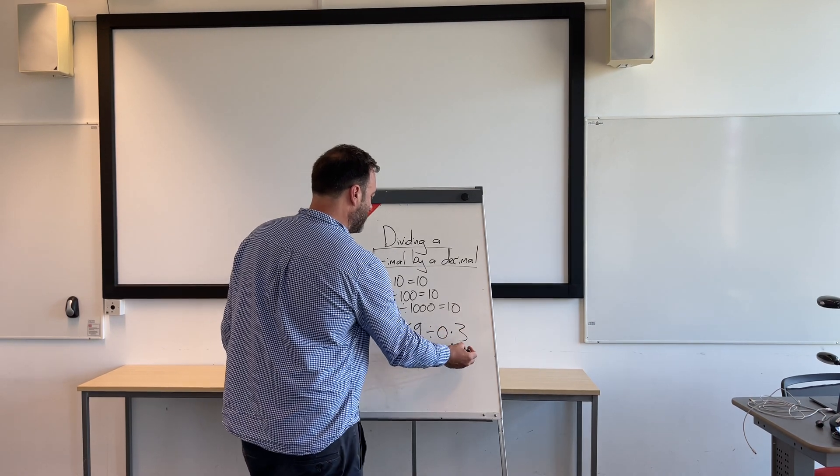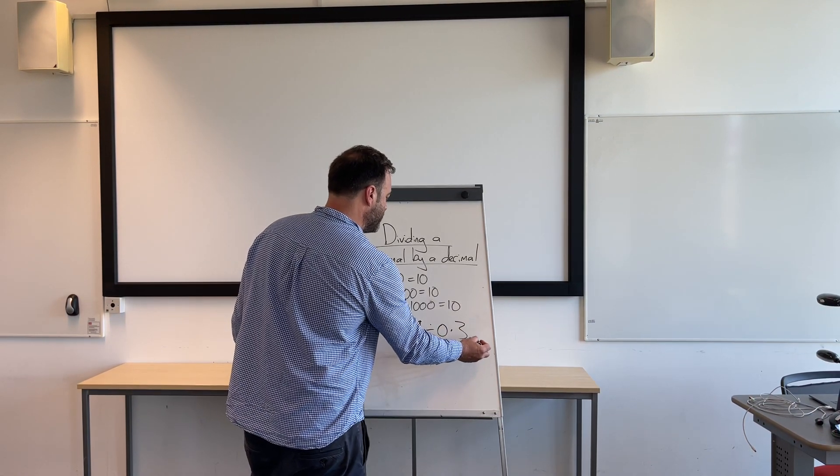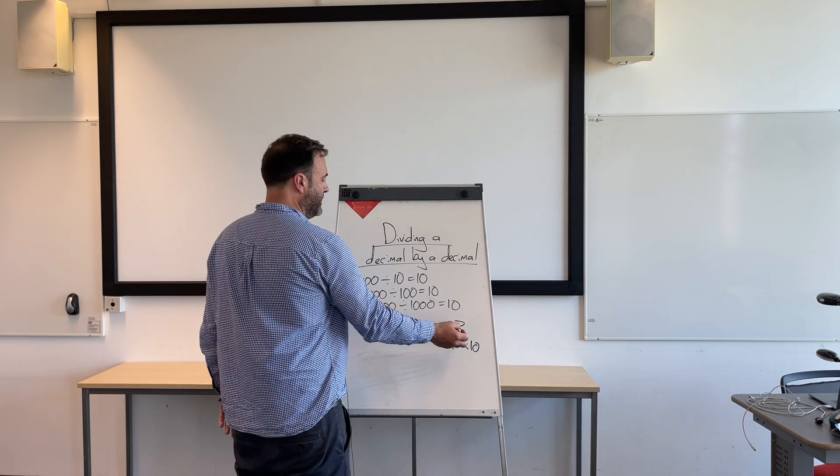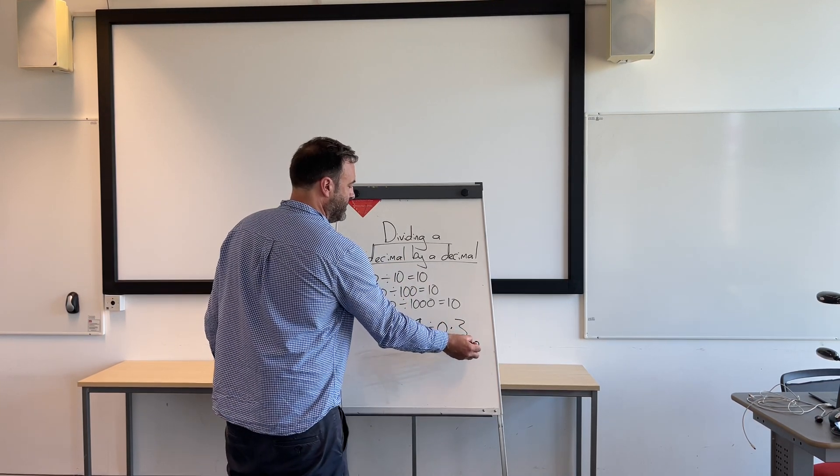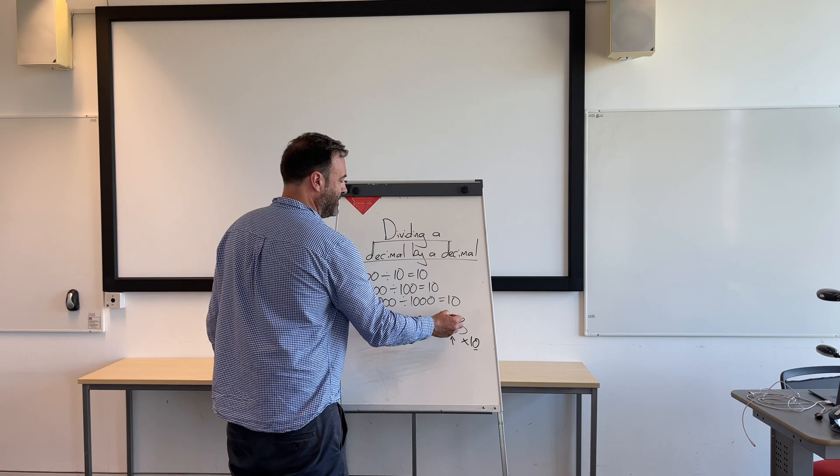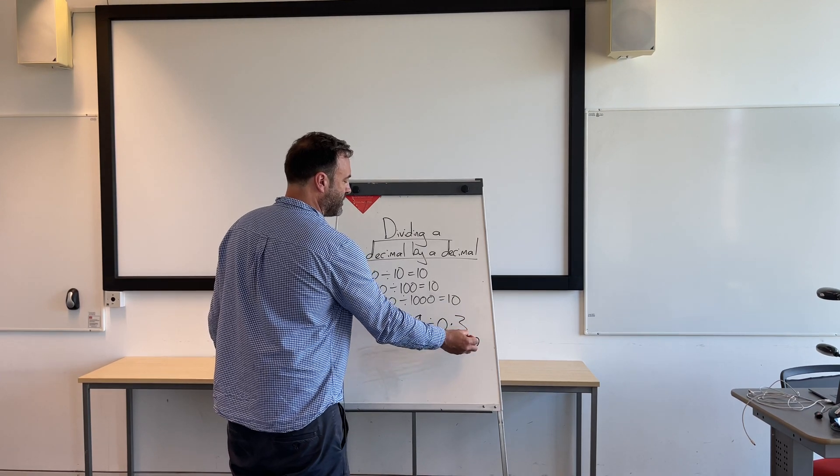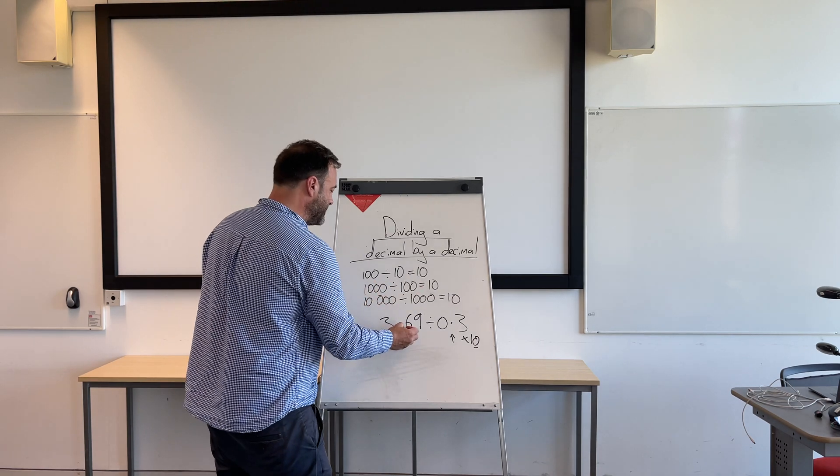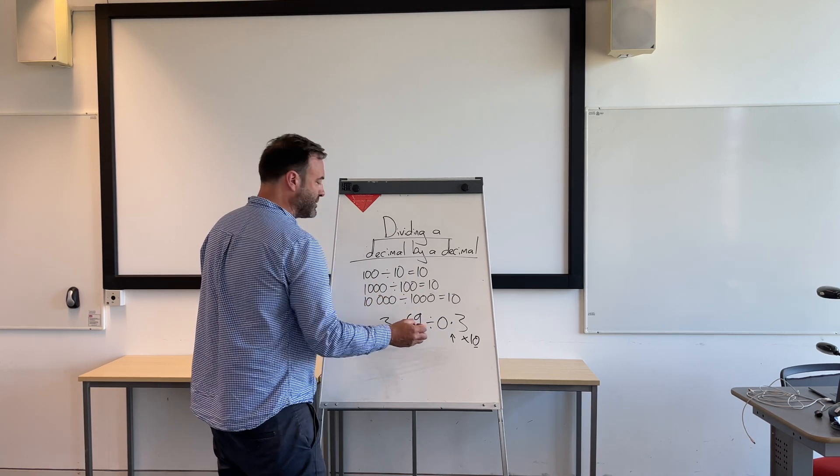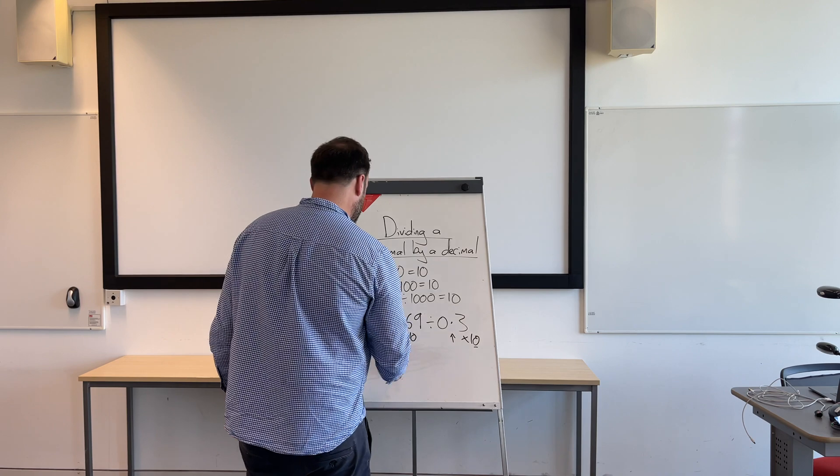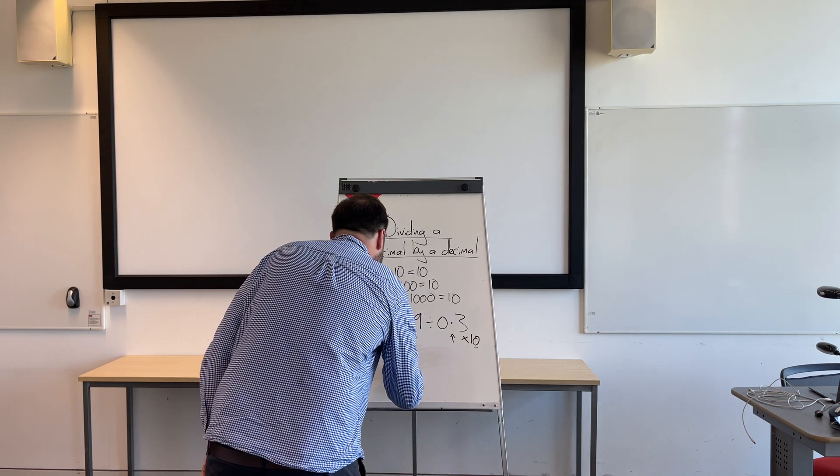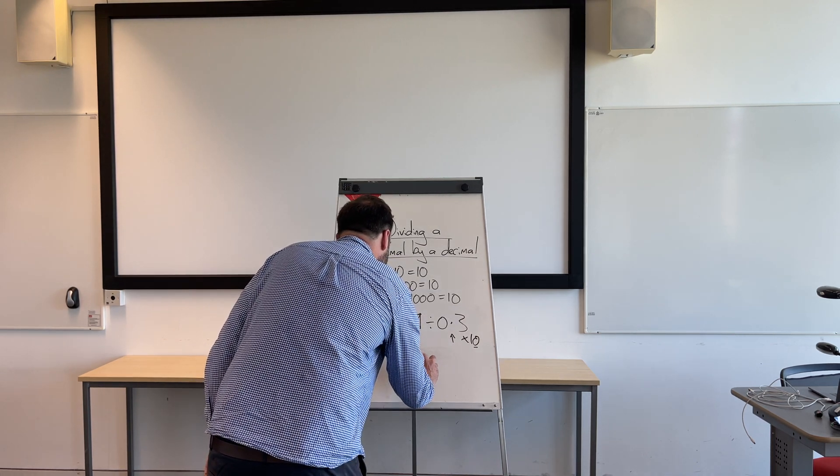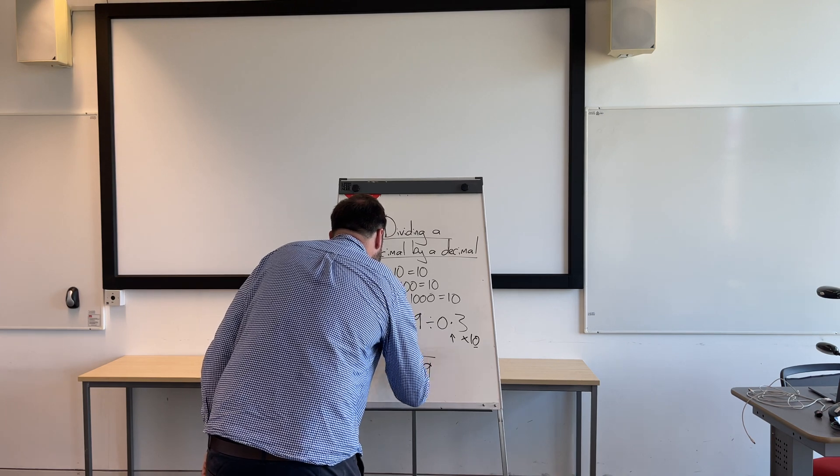If we look at this, what we would need to do to this to make it a whole number is times it by 10. Because, remember, in my last video I said, if you feed the flea zero, then the dot does one jump. So, if you multiply by 10, you get 3. But, remembering this, we need to do it to both sides to get the same answer.